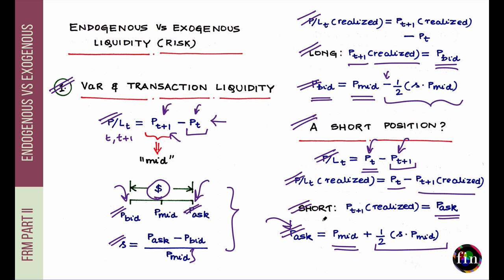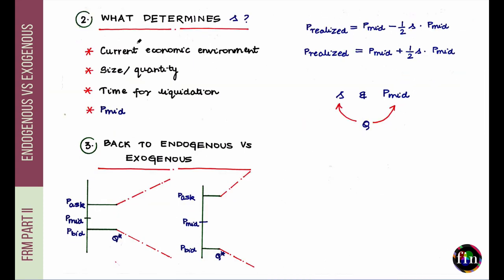That was the impact of asset or transaction liquidity on VAR computation. Everything has been written in terms of S. The spread S is modeled as a proportion of P_mid and should be treated as a random variable — just like P_(T+1) — because you do not know what S will be at the time you are in the market to liquidate your position.